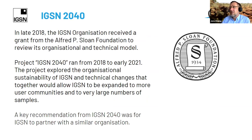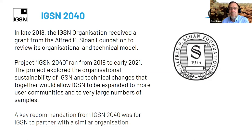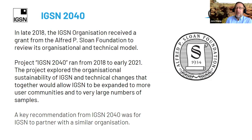To think about what to do next, they approached the Alfred P. Sloan Foundation. In late 2018, they received a grant to review their organizational and technical model — they called the project IGSN 2040. The project ran from 2018 to the end of 2021. It explored models of organizational sustainability and technical changes that would allow IGSN to expand to more user communities and to very large numbers of samples. A key recommendation from IGSN 2040 was for IGSN to partner with a similar organization.